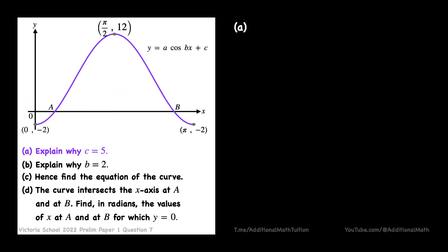To find vertical shift c, we will take the sum of maximum and minimum value of y and divide it by 2. Solving for c will give the answer of 5.